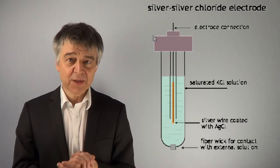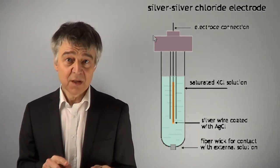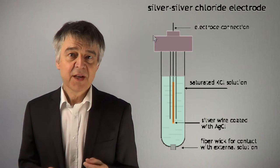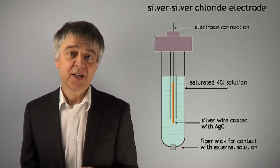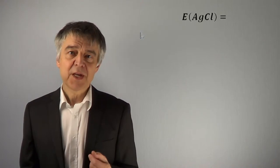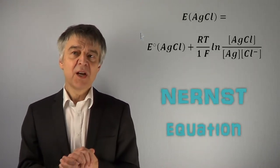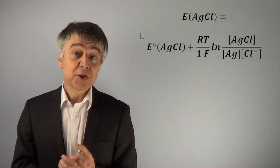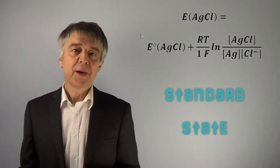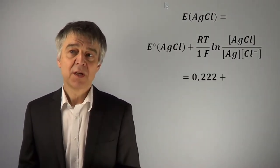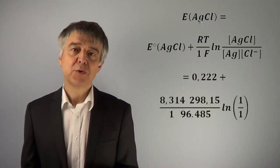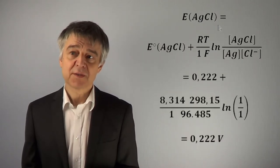At a silver chloride electrode, silver, solid silver chloride and the chloride solution are in equilibrium. This is the Nernst equation for this electrode. Since all involved species are in their standard state, we end up with a standard potential of 0.222 Volts.